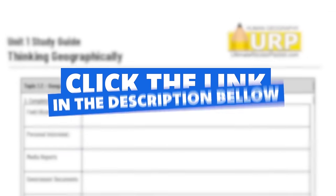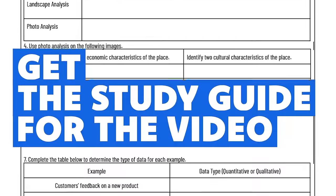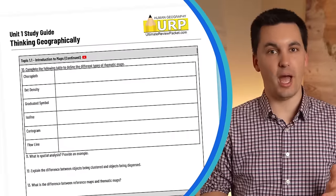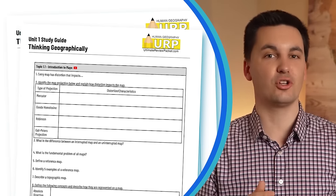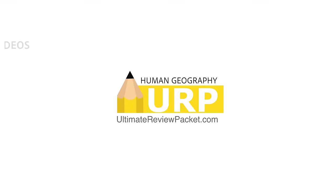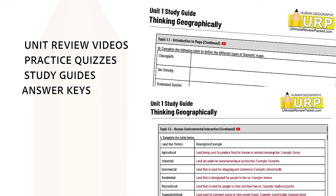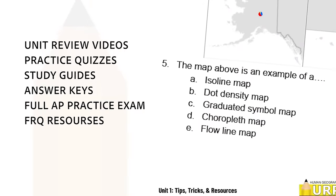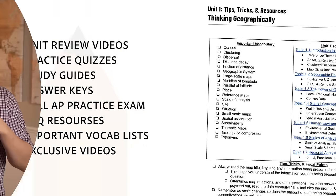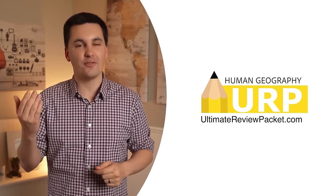Before we get started, click the link in the description to get the study guide that goes along with the video. The study guide can be found in my Ultimate Review Packet. The packet has unit review videos for each unit, practice quizzes, study guides, answer keys, full practice AP exams, FRQ resources, important vocab lists, exclusive videos and other resources to help you get not only an A in your class but a 5 on the national exam.